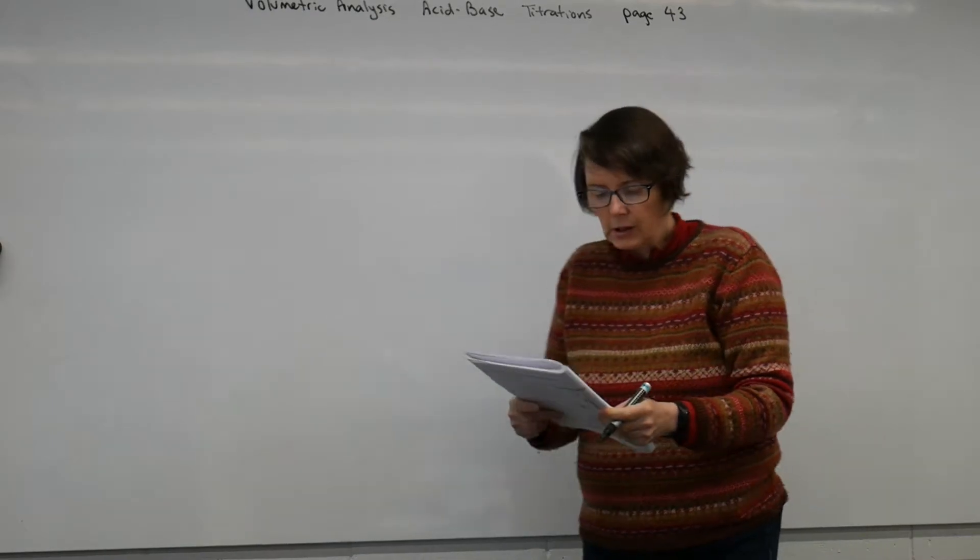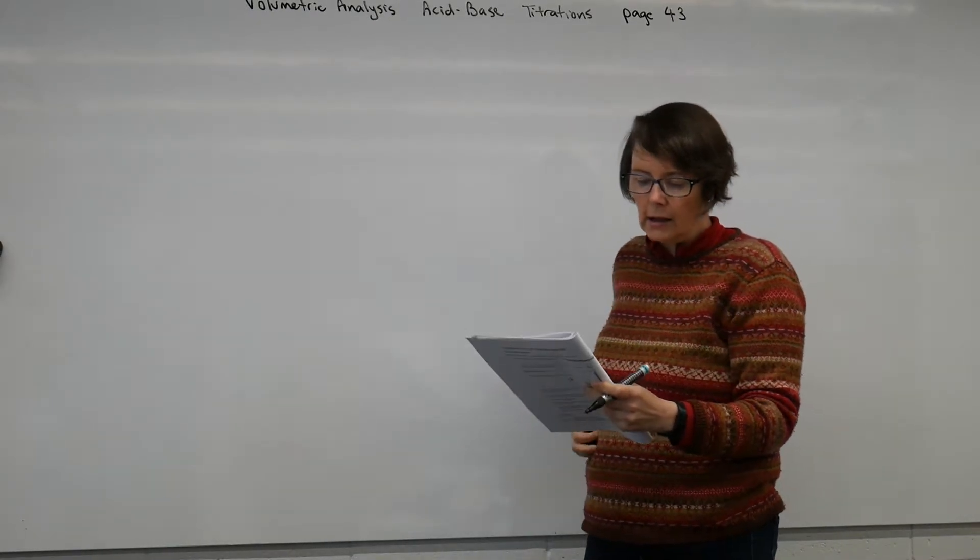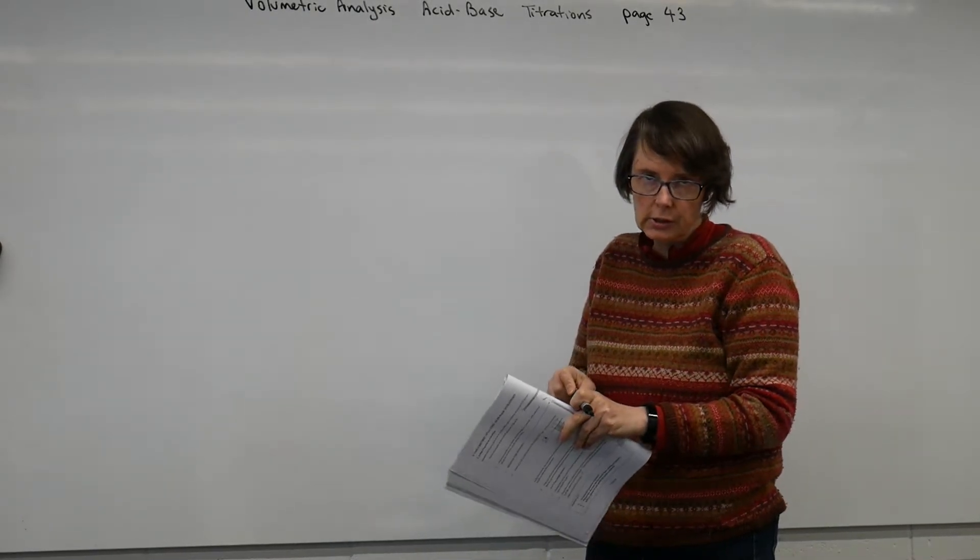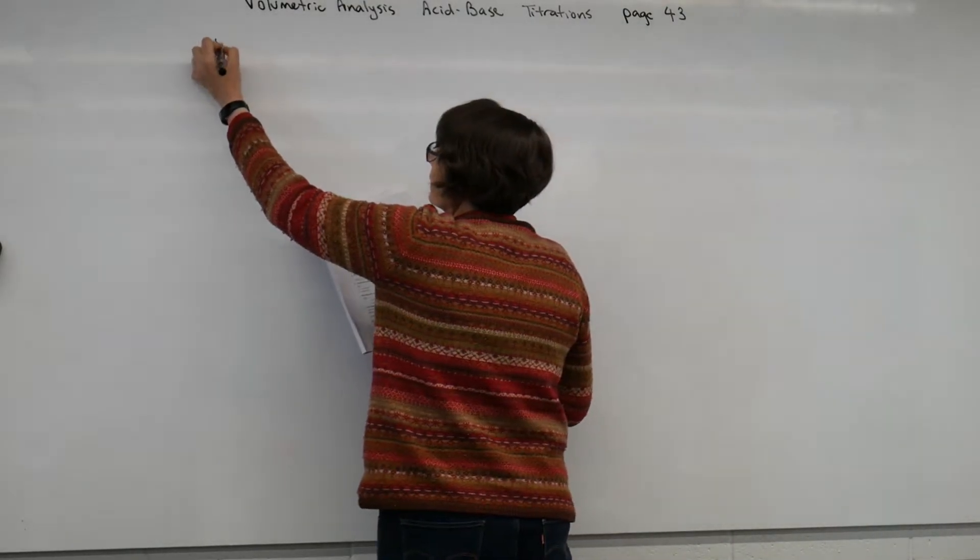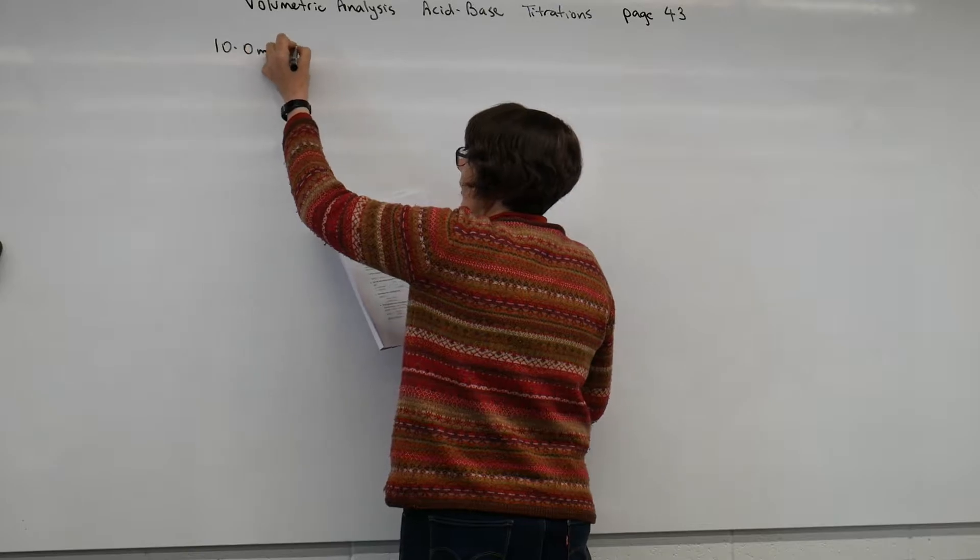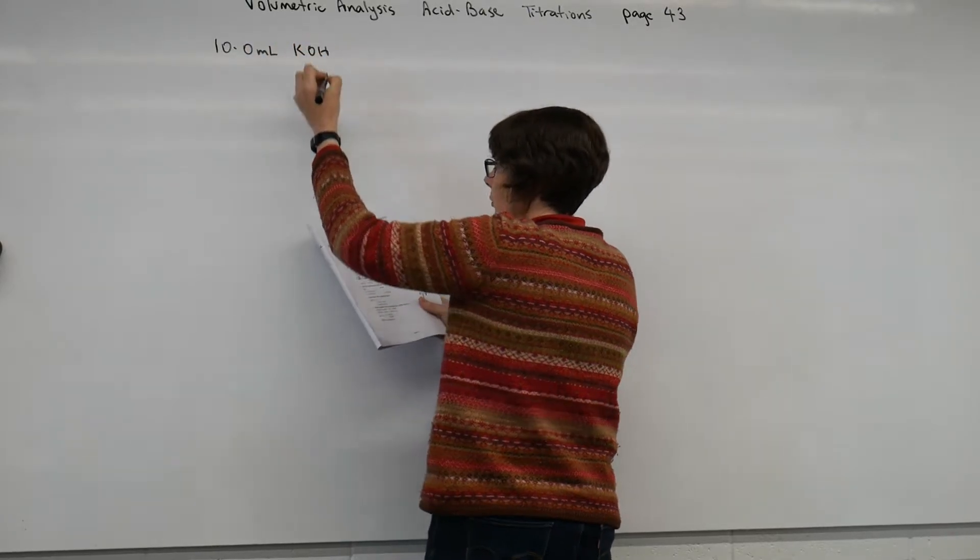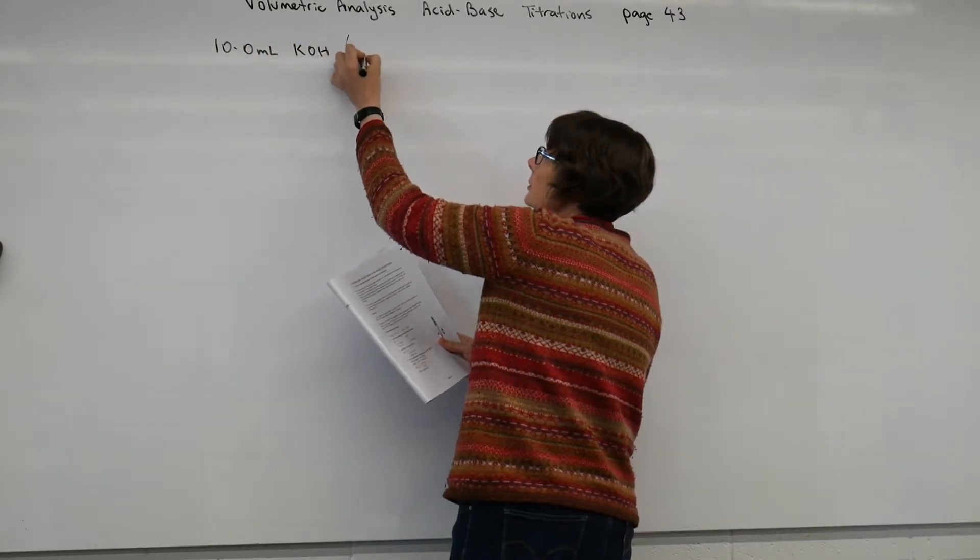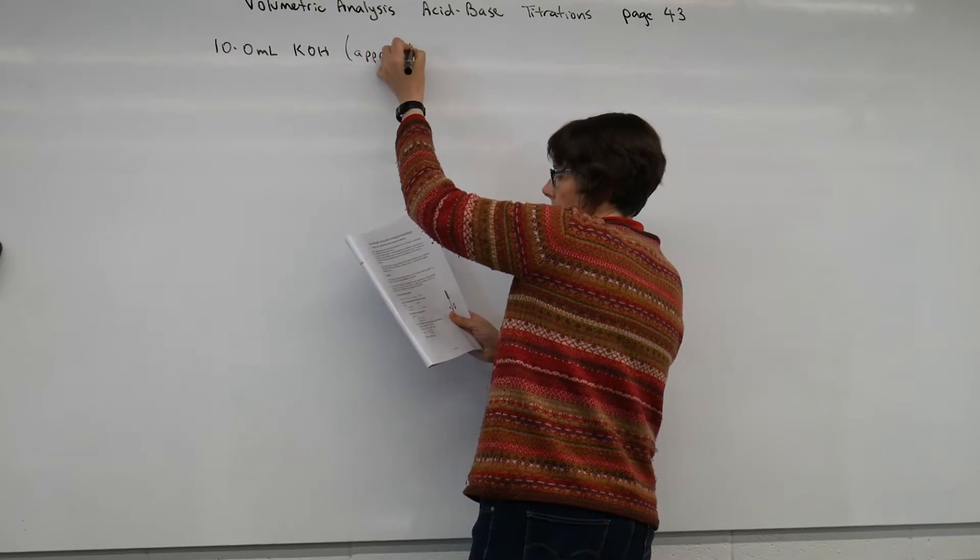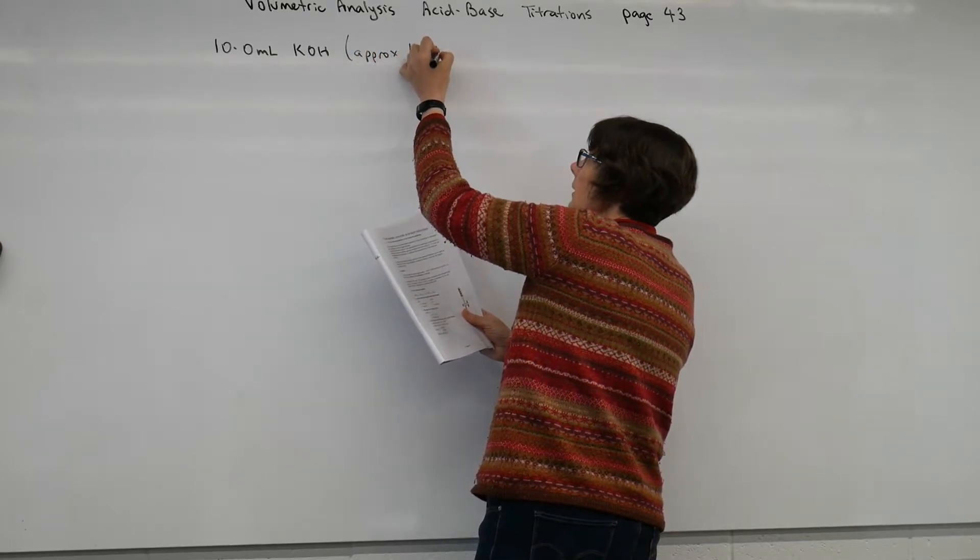The example tells me that I have a 10mm aliquot. So an aliquot is just a measured volume of potassium hydroxide, and it's approximately one mole per litre.